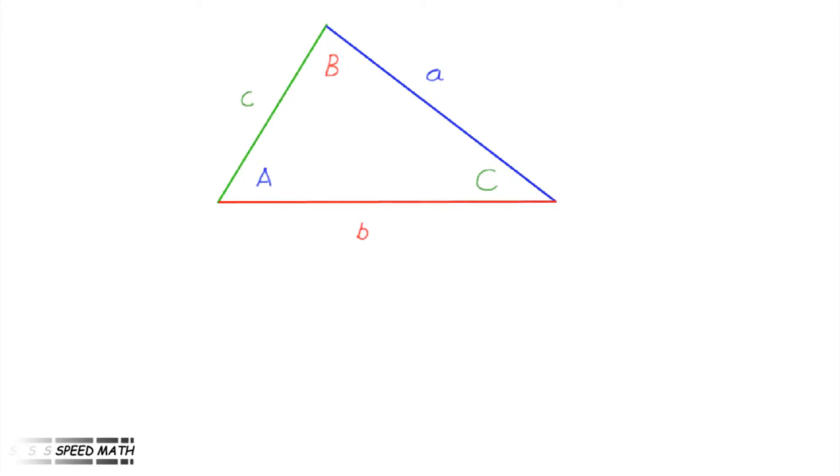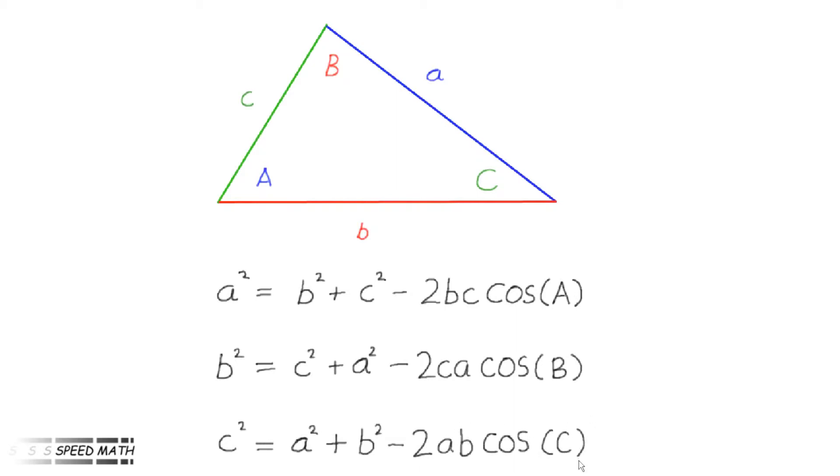So here are the cosine rule equations. a² equals b² plus c² minus 2bc cos(A). b² equals c² plus a² minus 2ca cos(B). c² equals a² plus b² minus 2ab cos(C). In each case, the square of each side is represented in terms of the other two sides and the included angle. You'll see there is a pattern here.